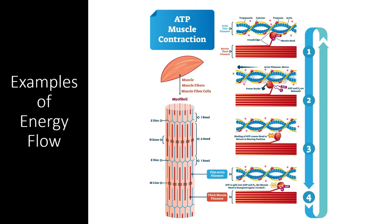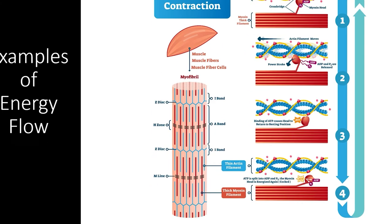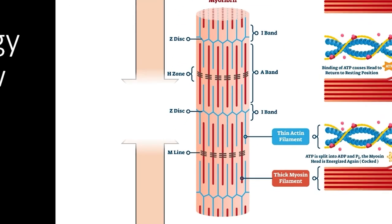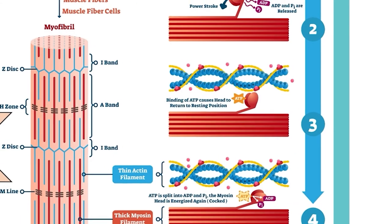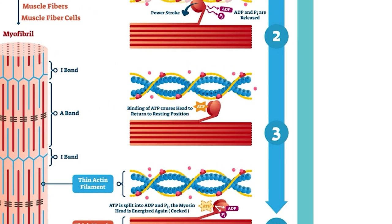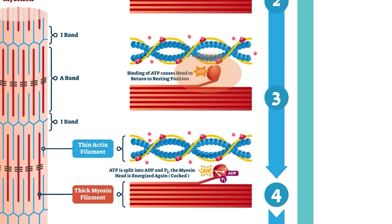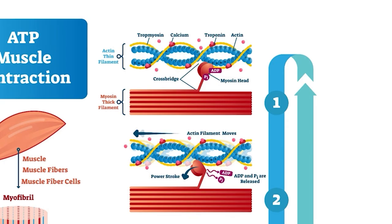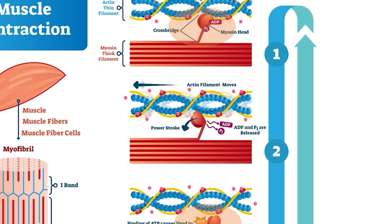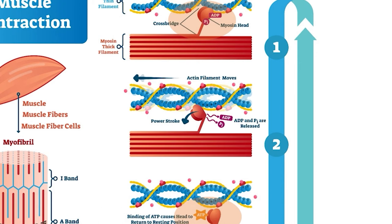To better understand how cells maintain order and energy flow, let's go back to the muscle cell example. Every time you flex your muscle, bands of proteins in each muscle fiber shorten, causing entire muscles to shorten. In order to do this, the protein strands require ATP. An ATP molecule binds to the protein myosin, which catalyzes the release of energy as ATP is converted to ADP. The energy causes the myosin head to lurch forward; it attaches to a thin actin filament, and as the myosin protein returns to its normal position, it completes a power stroke, pulling the strands of actin and myosin together and shortening the muscle cell.